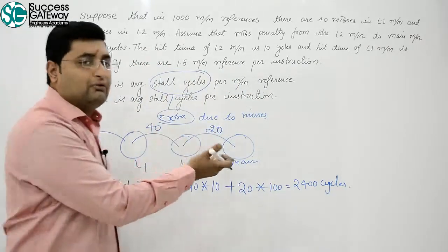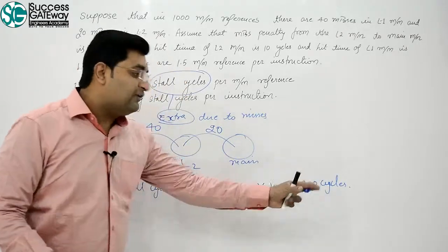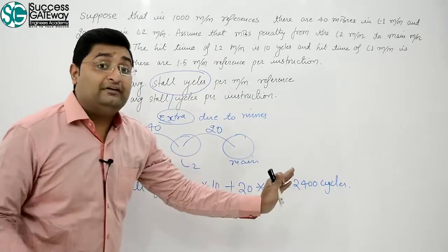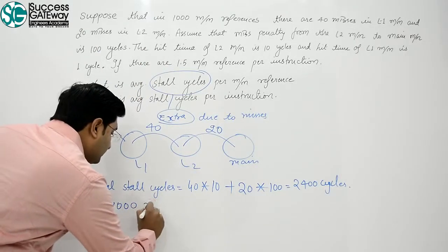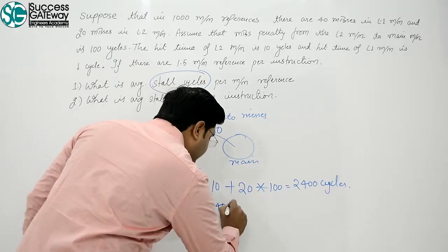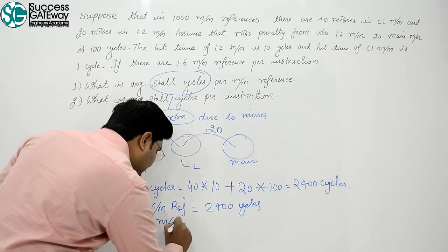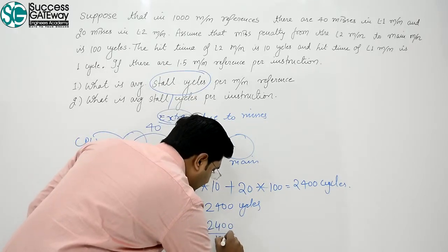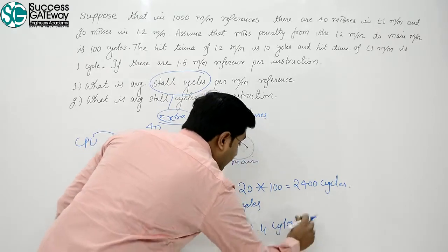I'm not writing 'clock' explicitly because it is understood — it can only be clock cycles. So total stall cycles = 2400 for 1000 memory references. For one memory reference: 2400 divided by 1000 = 2.4 stall cycles.